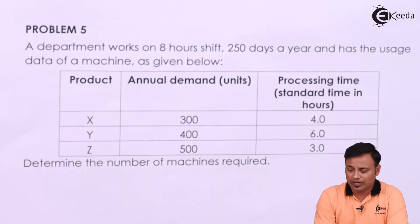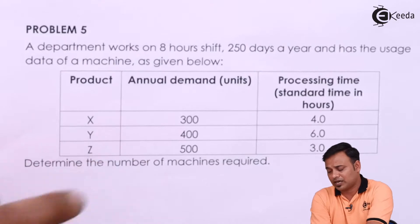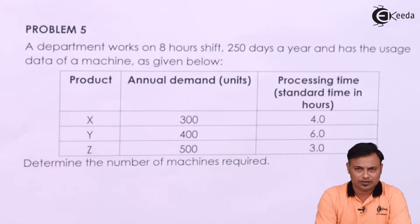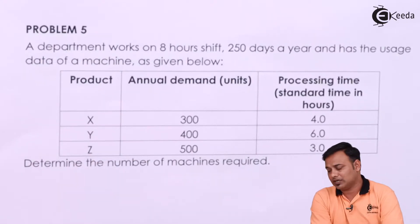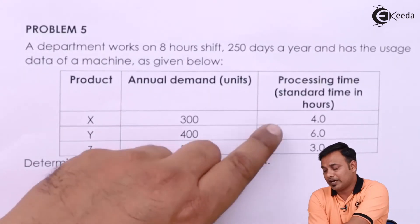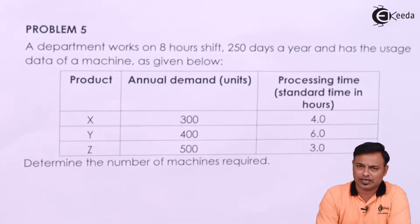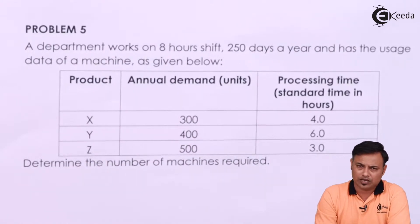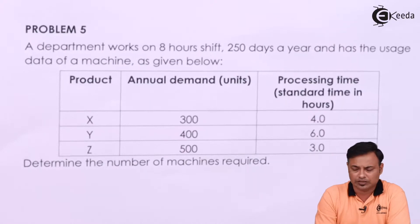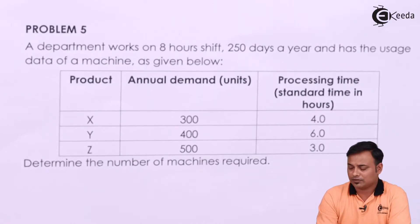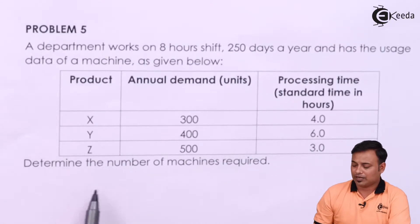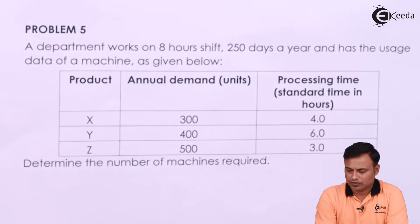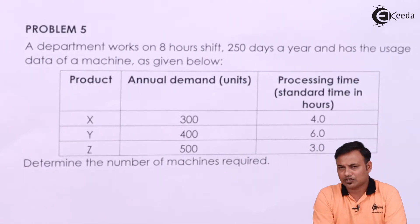The annual demand for these products is given, and they have also given us the standard time in hours — that is the standard time to process and manufacture the products on that particular machine. What we are asked is to determine the number of machines required.